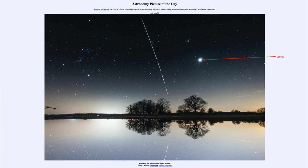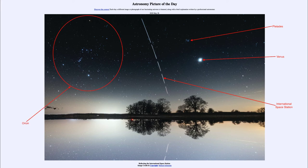Just above and to the left of Venus we see the Pleiades star cluster, a small open cluster of stars. In the middle we see the track of the International Space Station. And off to the left hand side we can see the constellation of Orion — one of the very prominent constellations in the winter sky — with the bright red star Betelgeuse towards the upper left hand side, towards the very top of this image.